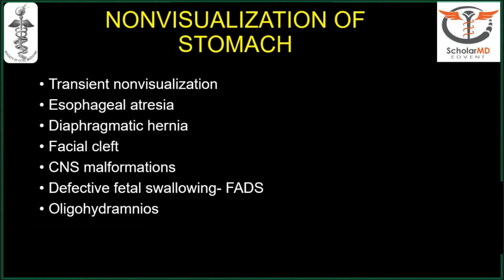Non-visualization of the stomach is not the sole preserve of esophageal atresia. Other causes include transient non-visualization, diaphragmatic hernia where the stomach is in the thorax, all disorders causing defective swallowing such as facial cleft, neck masses, CNS malformations, fetal akinesia/dyskinesia sequence, and also oligohydramnios where there is insufficient fluid to fill the stomach.